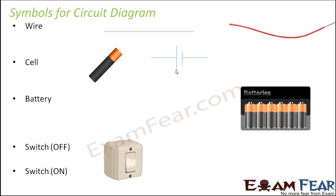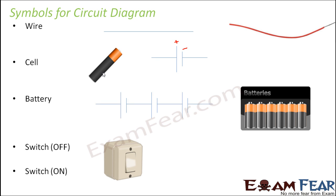Why do we have two lines of different lengths? The longer line represents the positive terminal of the cell and the shorter line represents the negative terminal. It is very important to differentiate between the positive and negative terminals, because the direction of conventional current flows from the positive terminal towards the negative terminal. For a battery, since it is a combination of cells, many cells put together form the battery symbol.